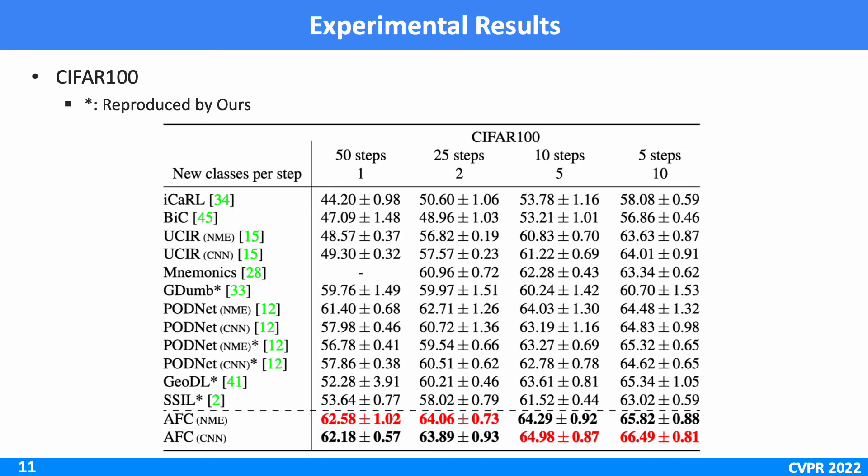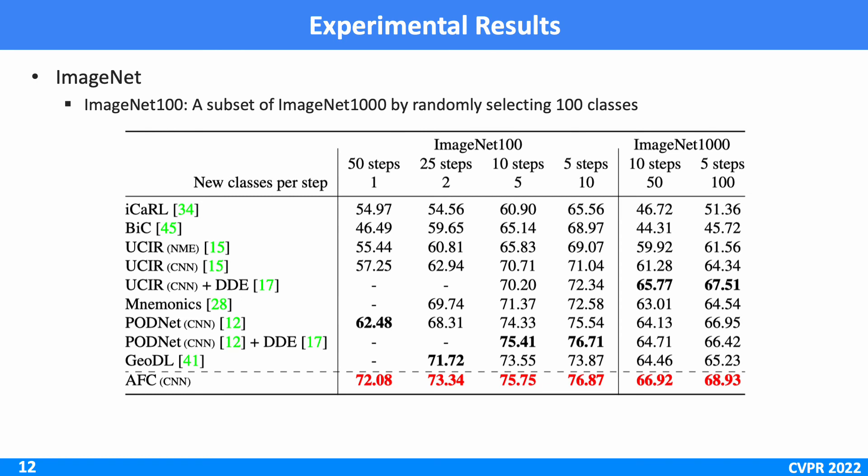For the experiment, we compare with the state-of-the-art methods on the CIFAR-100 dataset. The table shows that our algorithm referred to as AFC achieves the highest accuracy in all the testing number of incremental stages. Also, the proposed method shows outstanding performance on the ImageNet dataset.